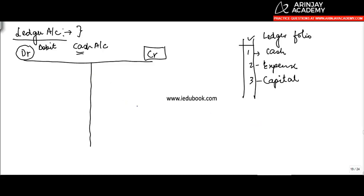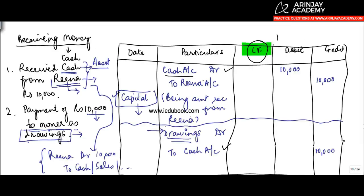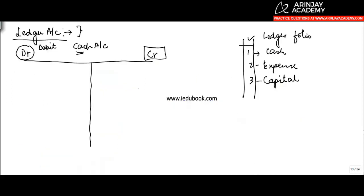But suppose tomorrow I want to know what is the balance of cash which is lying with me on day 1, or in the middle of the year I want to know that. In that case, what I will need to do is go through this entire set of journal entries to find out the position of cash.